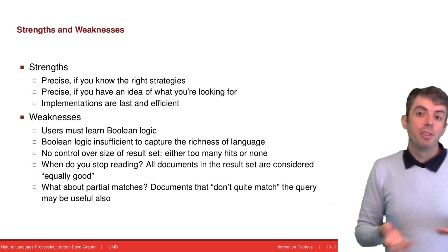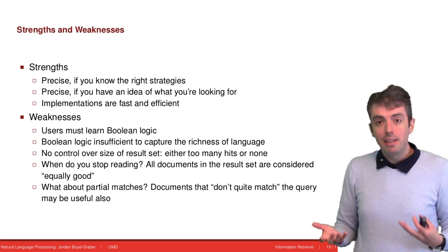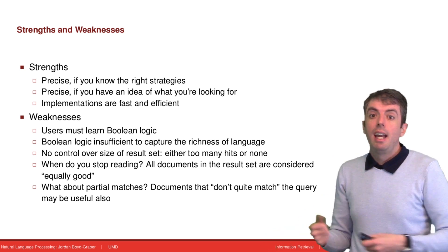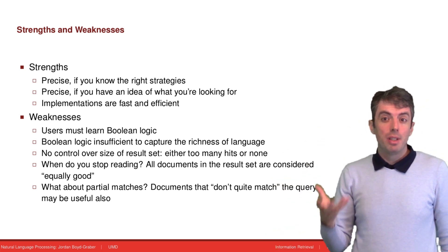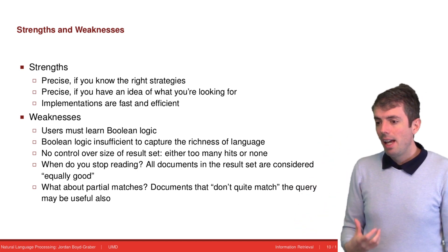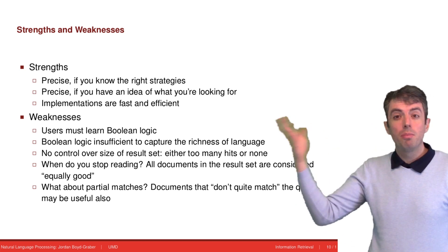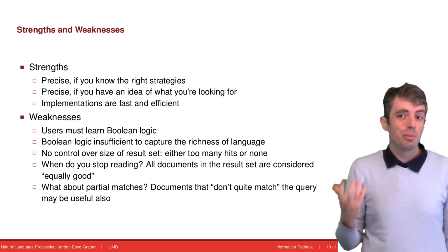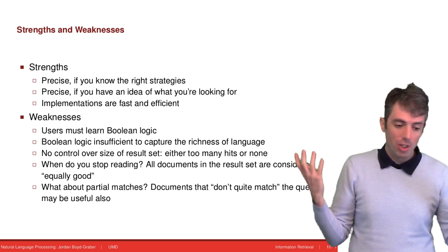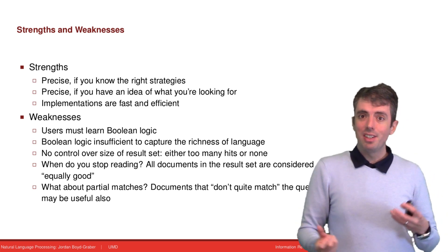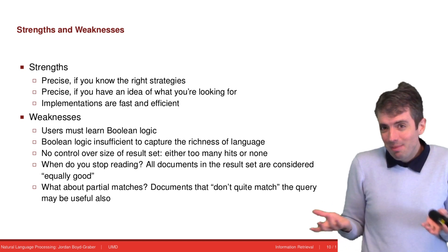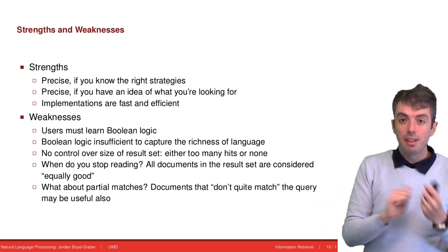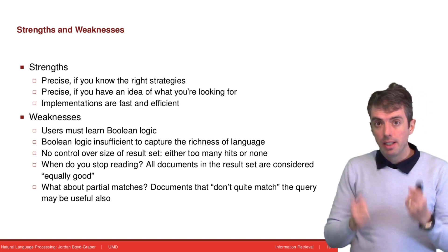Let's drill down into the strengths and weaknesses of Boolean-based retrieval. On the plus side, it's really precise — there's no fuzziness to it. Either a page matches the query or it doesn't. If you know the document you're looking for, you can find it — it may take a while, but you can find it. This was useful for finding pages you'd seen before or knew the content of. On the downside, it required learning complex syntax to write queries. For people who understood Boolean logic, this was manageable, even a little fun, but it wasn't accessible to the general public. On the plus side, these approaches were very fast to implement and returned results quickly.